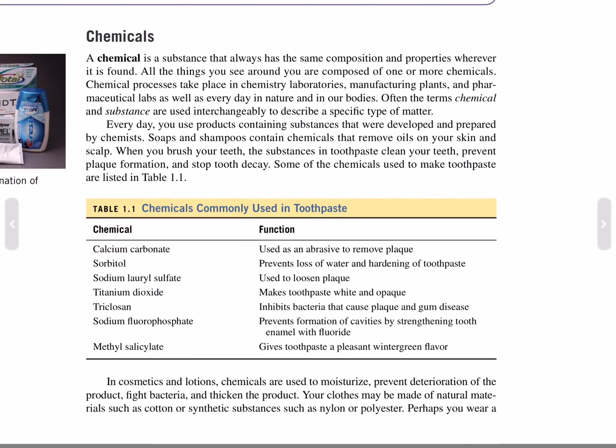Chemicals: A chemical is a substance that always has the same composition and properties wherever it is found. All the things that you see around you are composed of one or more chemicals. Chemical processes take place in chemistry laboratories, manufacturing plants, and pharmaceutical labs, as well as every day in nature and in our bodies.